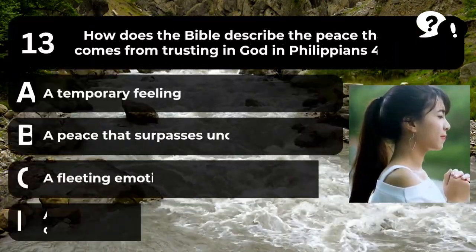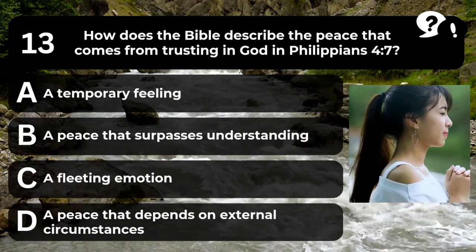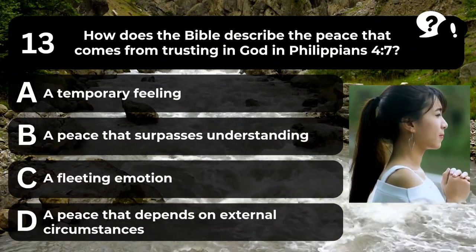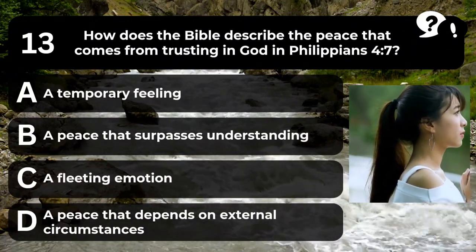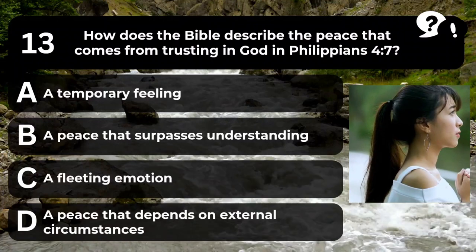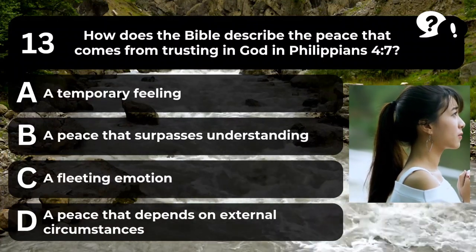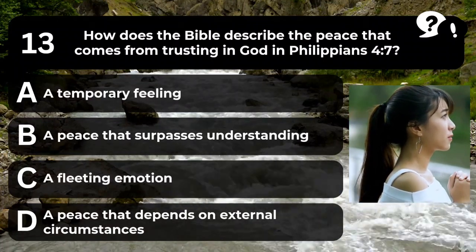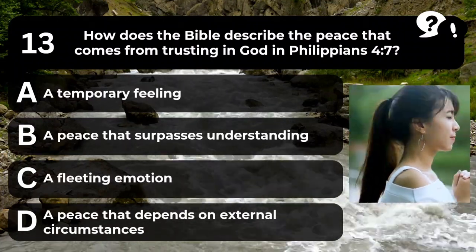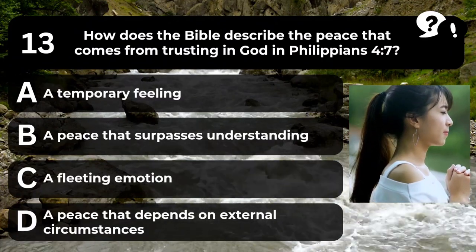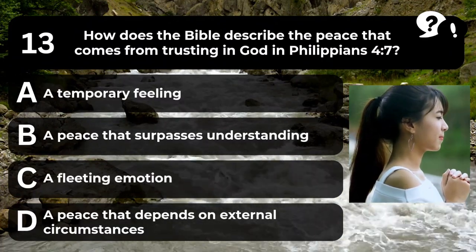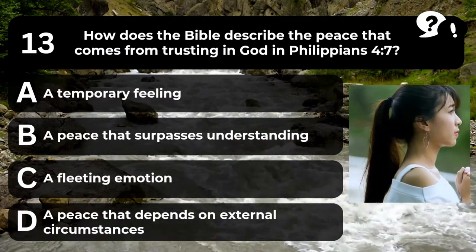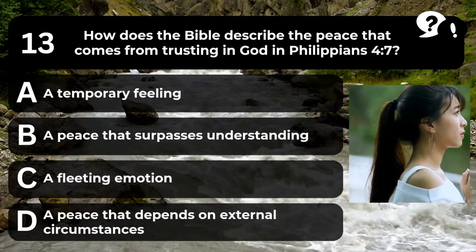Question 13. How does the Bible describe the peace that comes from trusting in God in Philippians 4:7? A. A temporary feeling. B. A peace that surpasses understanding. C. A fleeting emotion. D. A peace that depends on external circumstances.